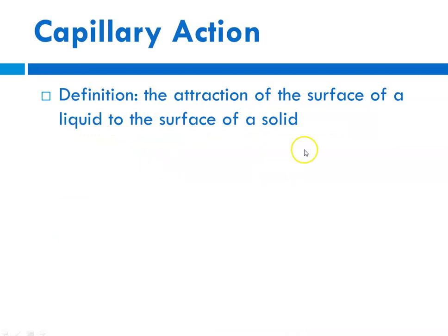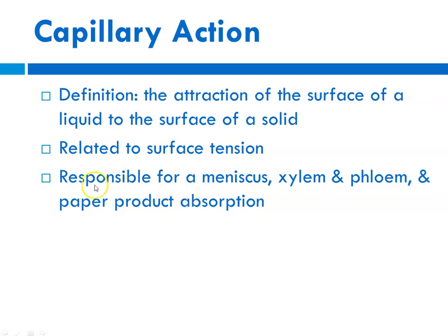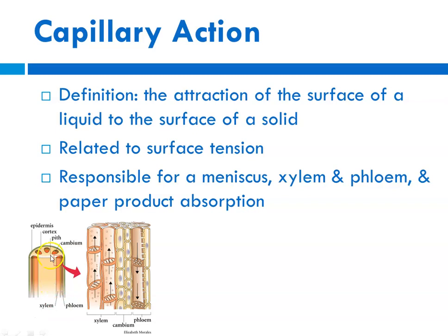Surface tension is related to capillary action, which is the attraction of the surface of a liquid to the surface of a solid. It's related to intermolecular forces of attraction — we've talked in the past about hydrogen bonding and dipole-dipole interactions. It's responsible for the meniscus that forms in our graduated cylinder, and also responsible for how plants can absorb water through their roots, and how paper products like a paper towel or napkin can pick up water off a surface. In the case of plant roots and stems, you've got your xylem.